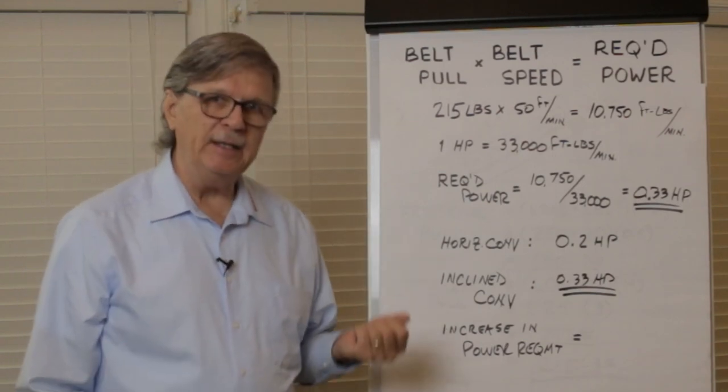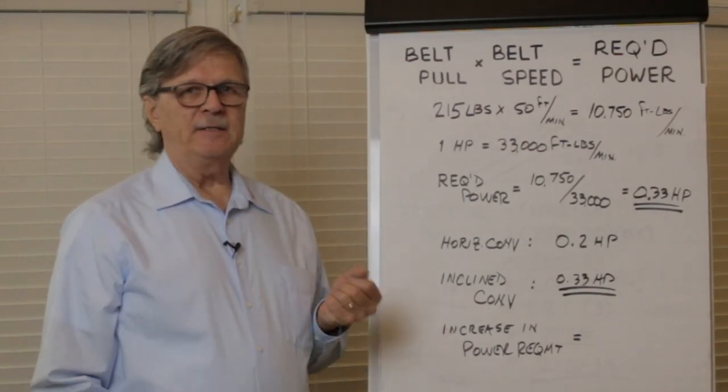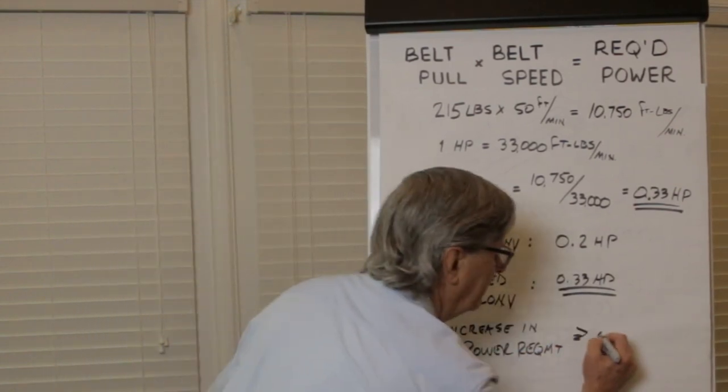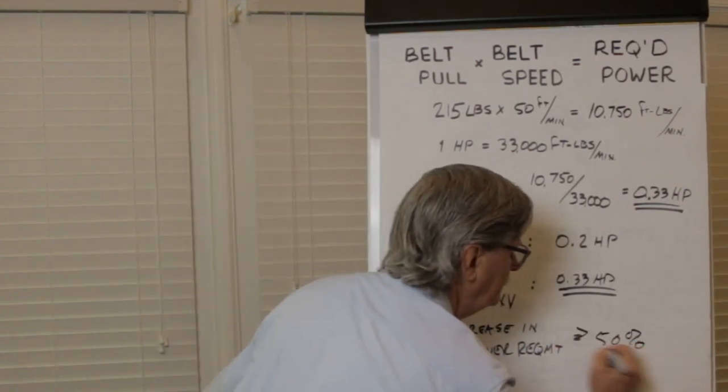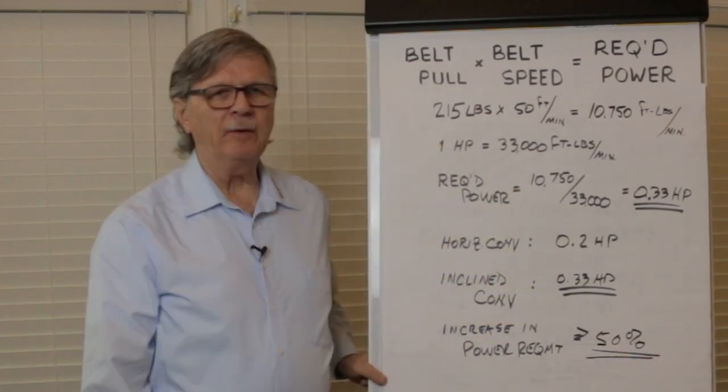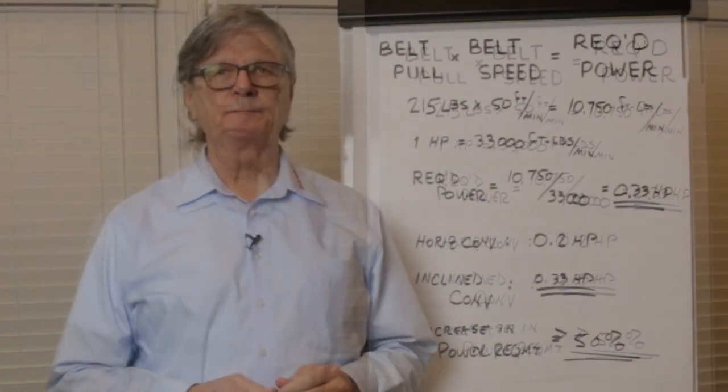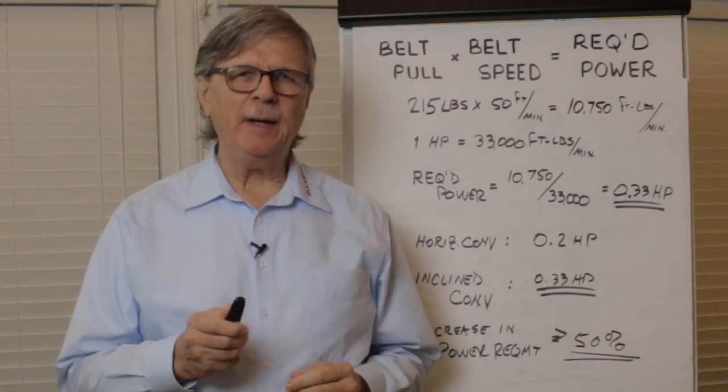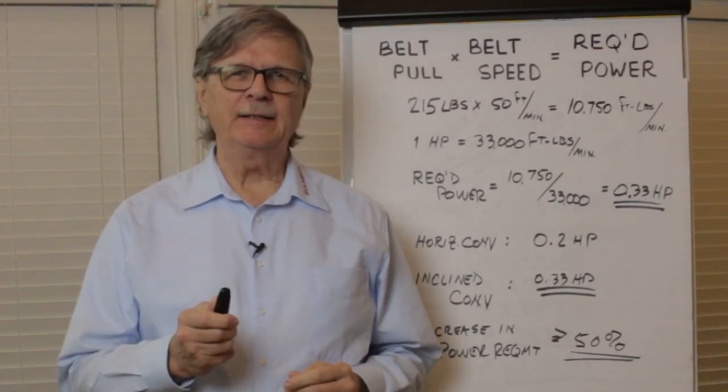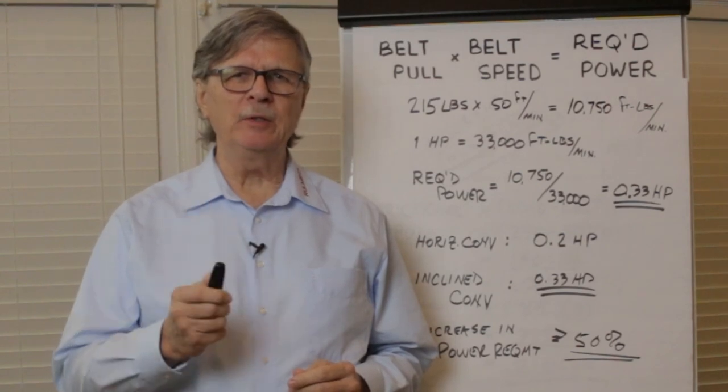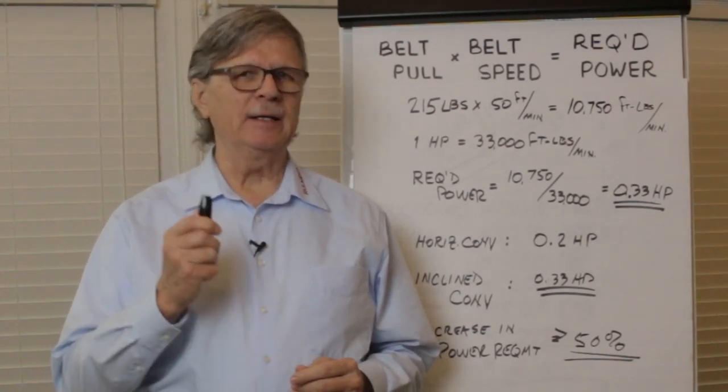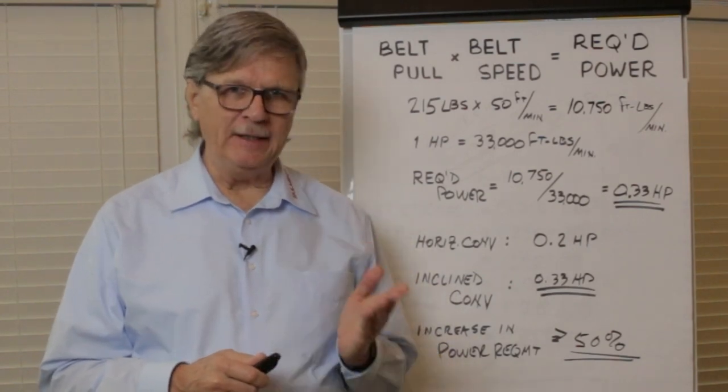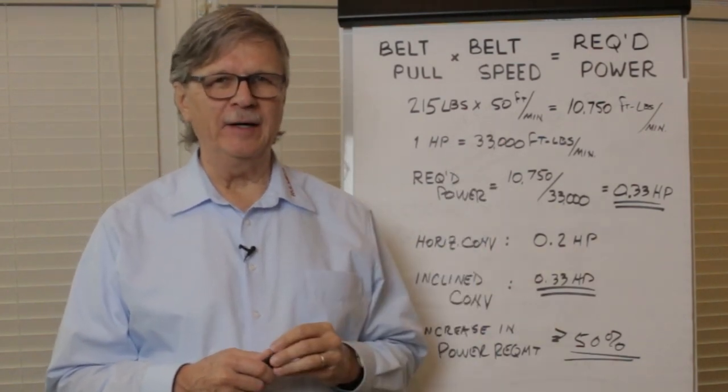That means that the increase in power because of the extra pull required to overcome gravity is more than 50%. That increase in power underlines the fact that it's very important to remember to include gravity as well as friction when calculating required belt pull and belt power on an inclined plane conveyor.